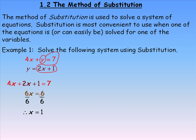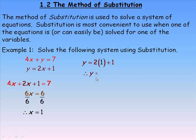Now that I know x equals 1, I want to find y. I can substitute 1 in place of x in either equation. I'll use the second one: y equals 2x plus 1. Putting 1 in for x, 2 times 1 is 2, plus 1 is 3, so y equals 3. I think the solution is x equals 1 and y equals 3, which should satisfy both equations.